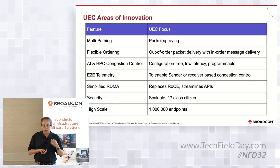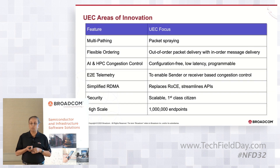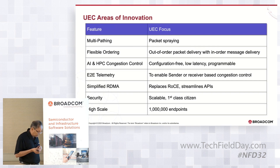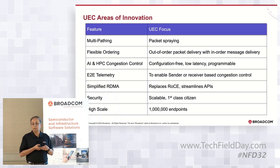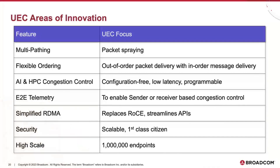Other areas include modifying the RDMA stack — RDMA has been a single-path protocol — to support multi-pathing in the network. Security is also being incorporated into the back-end network. And scaling to a million endpoints. These are the overarching goals of the Ultra-Ethernet Consortium that we as Broadcom are driving, working with other founding members.